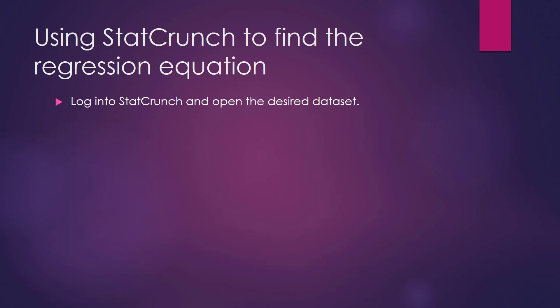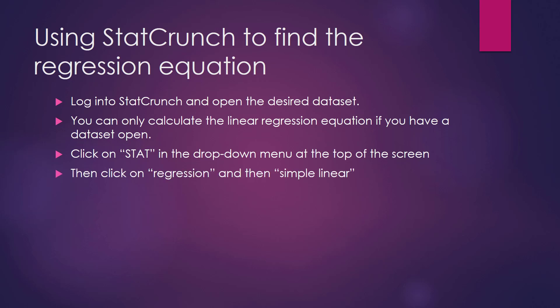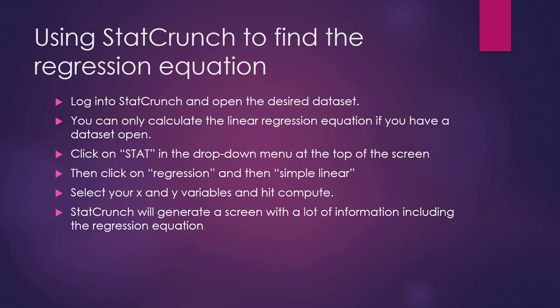Now that you've opened your dataset, you can start to analyze the data using StatCrunch to find the regression equation. Remember, you can only calculate the linear regression equation if you already have a dataset open — having a blank StatCrunch window open is not going to help you. Click on Stat in the drop-down menu at the top of the screen, then click on Regression and then Simple Linear. Select your X and Y variables and hit Compute.